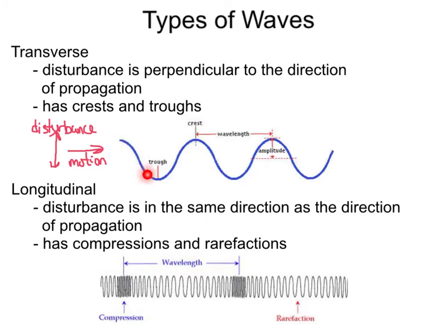As we can see in this transverse wave, there are many characteristics. The top part of the wave is called the crest, and the bottom part of the wave is called a trough. The second type of wave is a longitudinal wave. This is where the disturbance is in the same direction as the direction of propagation — on this slinky, the disturbance is in this direction, and the wave moves in the same direction.